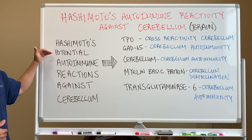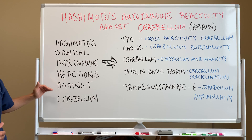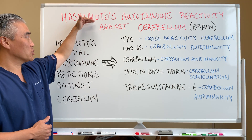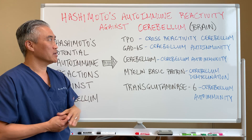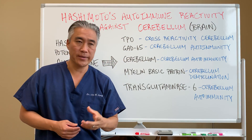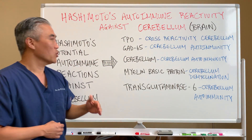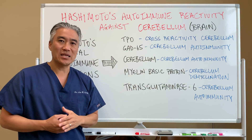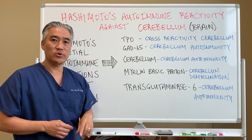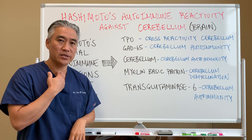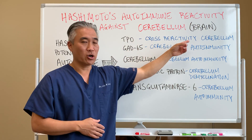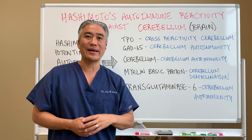Hashimoto's has a potential autoimmune reaction against the cerebellum. Patients who have Hashimoto's thyroiditis can have an increased reactivity against the cerebellum, or part of the brain. What do we look for in terms of antibodies? If you have TPO antibody, which is for Hashimoto's thyroiditis or against your thyroid gland, cross-reactivity against the cerebellum is highly likely.